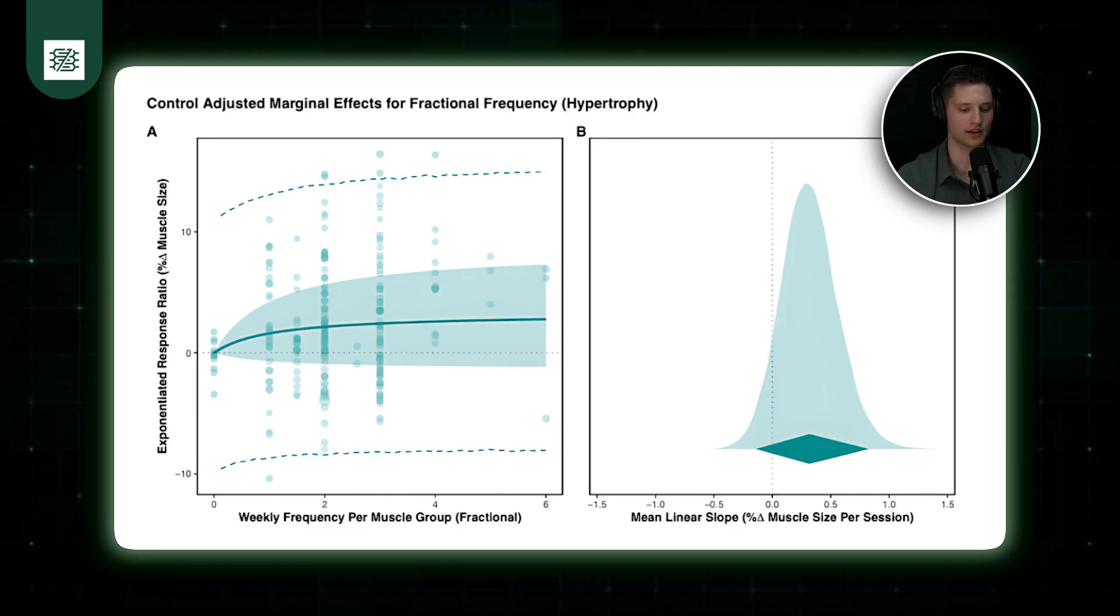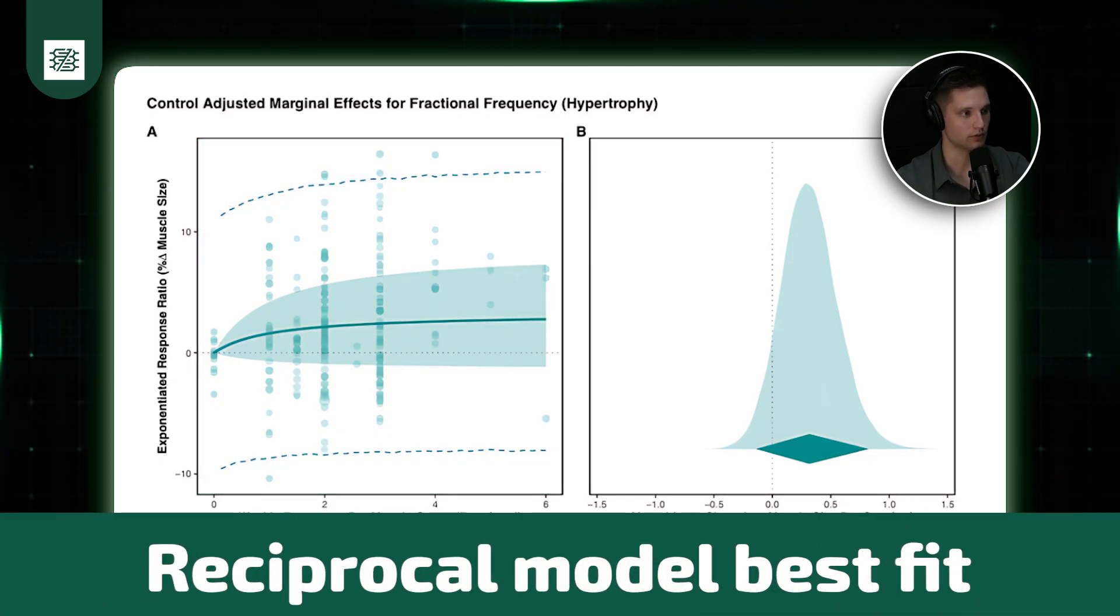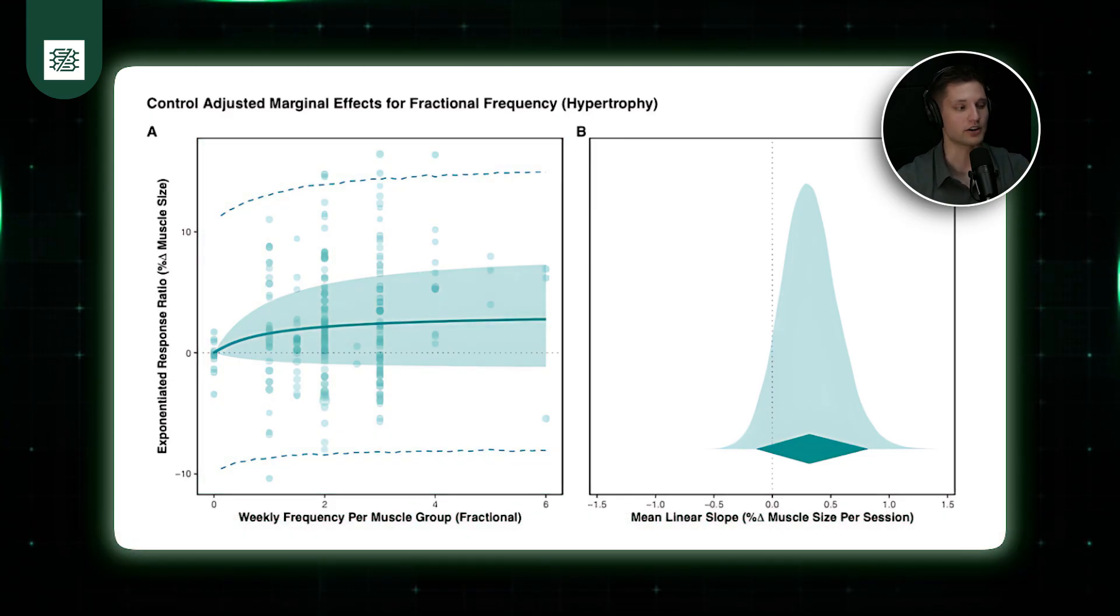And just for completeness sake, the best fit model approach here that is presented in Panel A is what's called a reciprocal model best fit. And that basically indicates to us very strong diminishing returns, and those diminishing returns happen quite quickly. So that is a general overview of our primary meta-regression for the effects of frequency on hypertrophy. But I'll pause here and see what other color you think is worth adding.